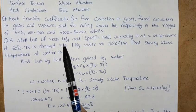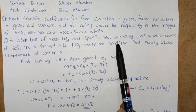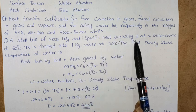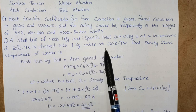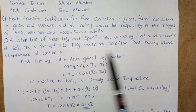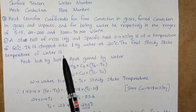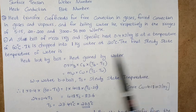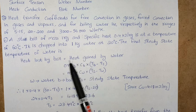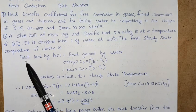A steel ball: next one more problem. A steel ball of mass 1 kg and specific heat 0.4 kilojoules per kg is at a temperature of 60 degree centigrade. It is dropped into 1 kg water at 20 degree centigrade. The final steady state temperature of water is—what we have to calculate the final steady state temperature of water.